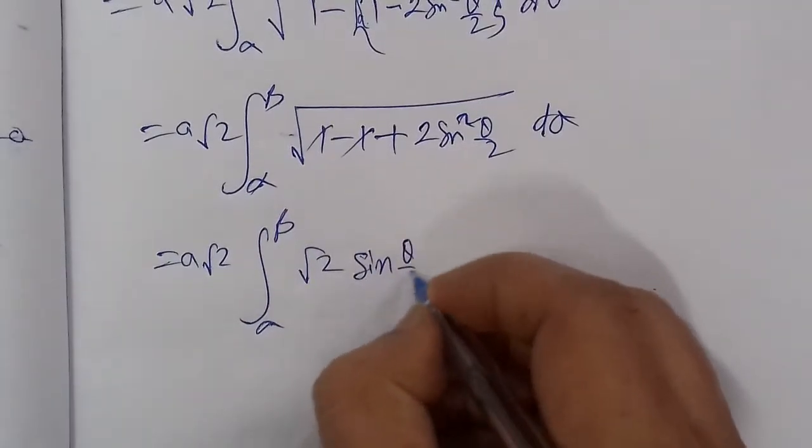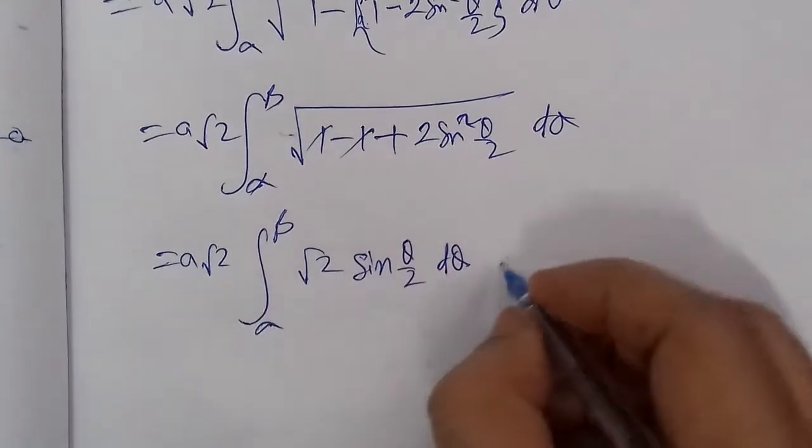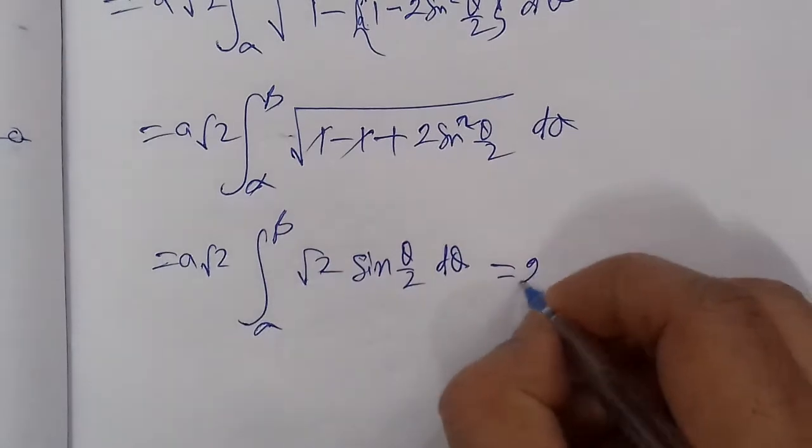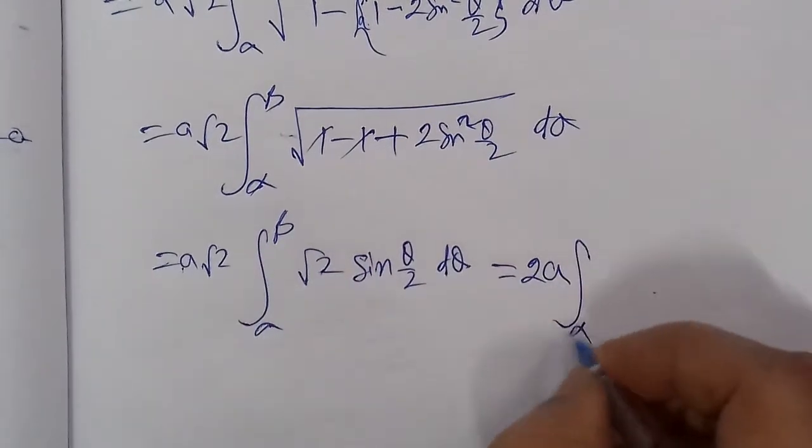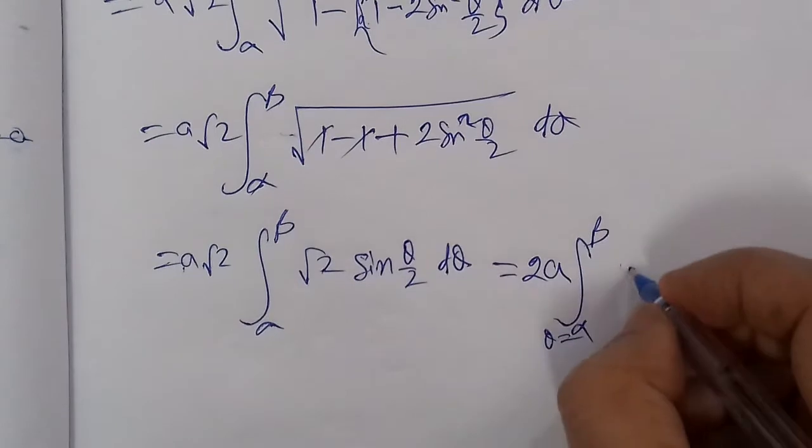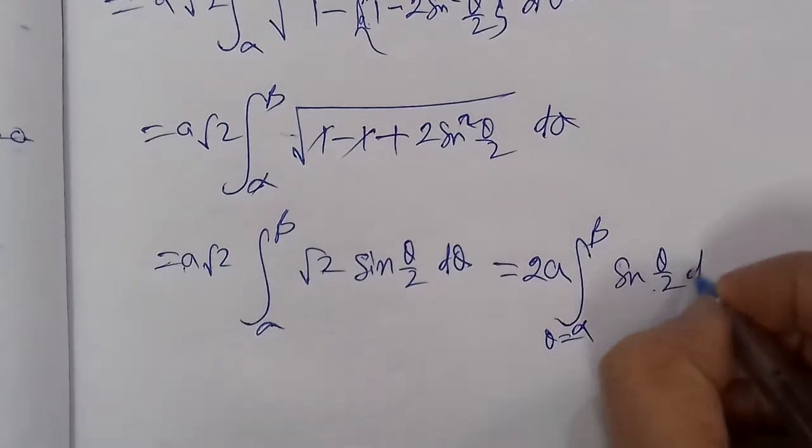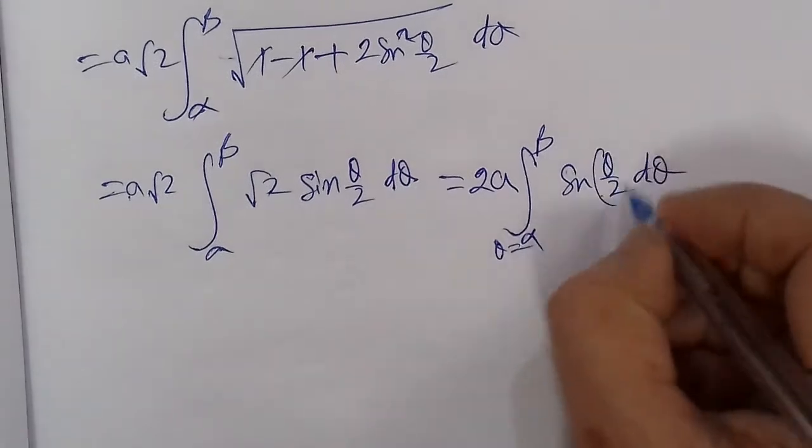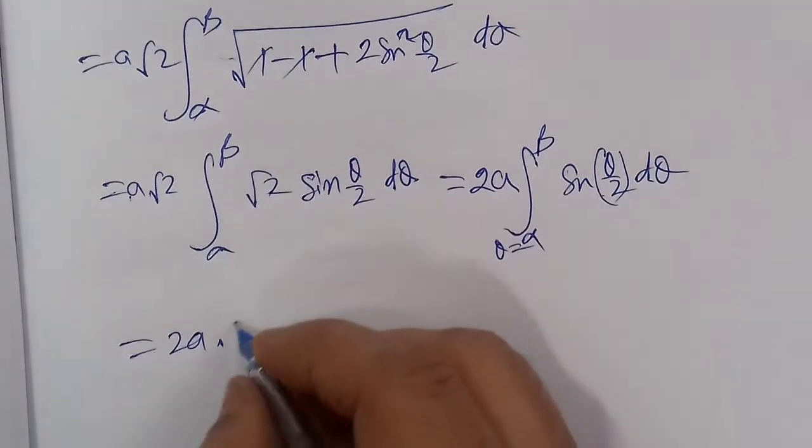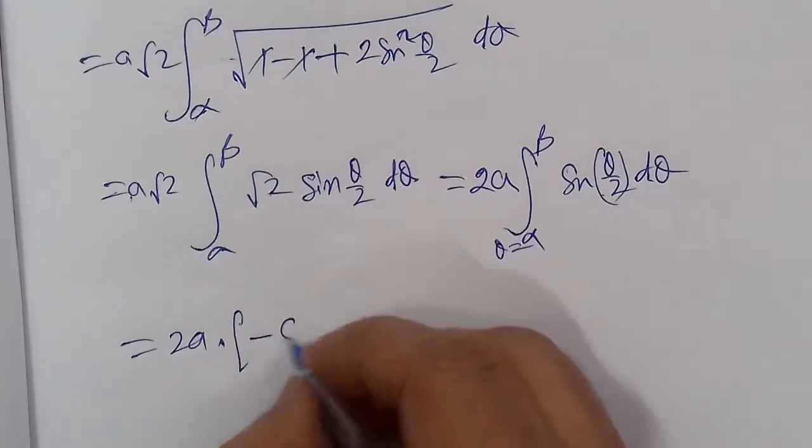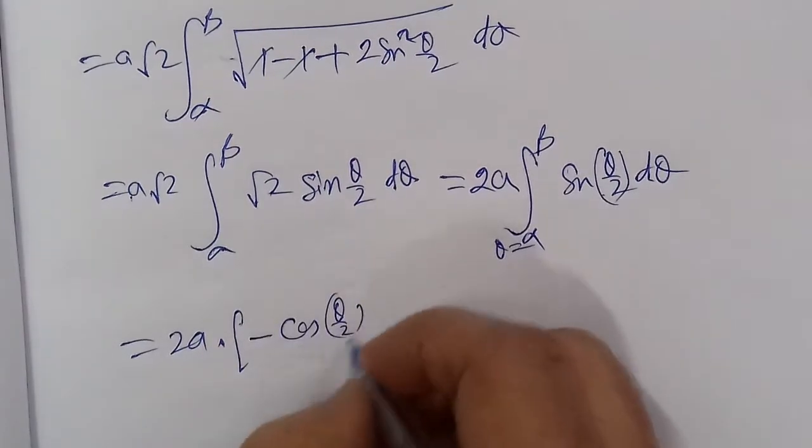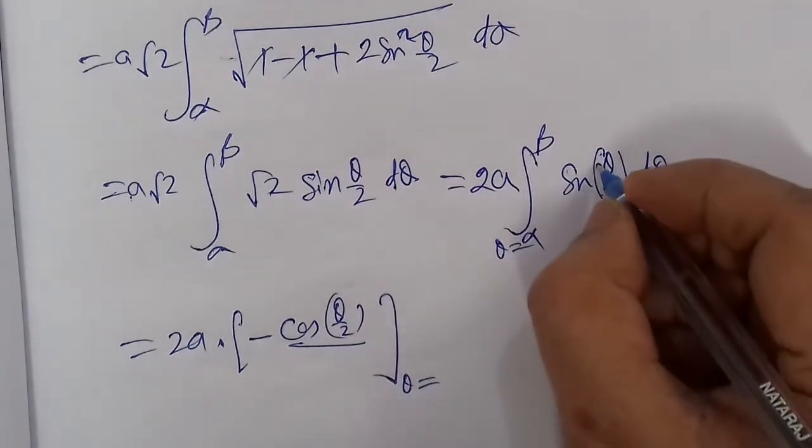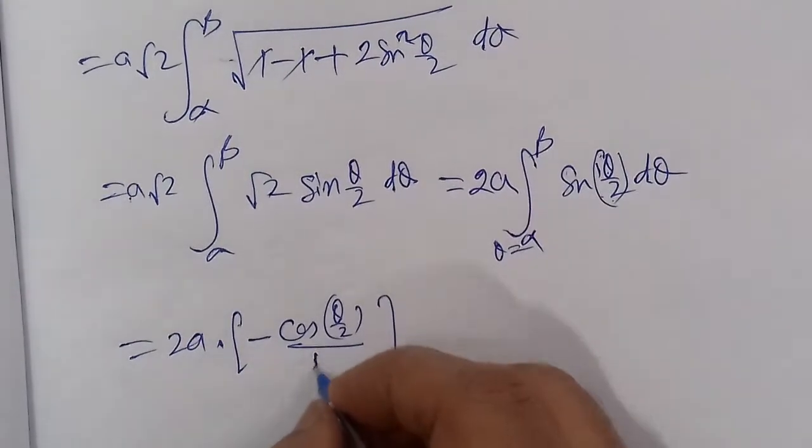√2 times √2 = 2, so we get = 2a integral α to β sin(θ/2) dθ. When we integrate, we get minus cos, but here θ is θ/2, so when differentiating θ/2 we get 1/2, then we multiply by 2.